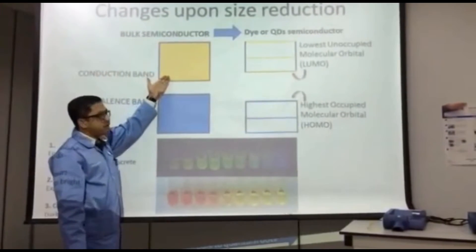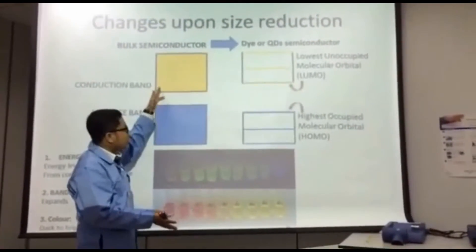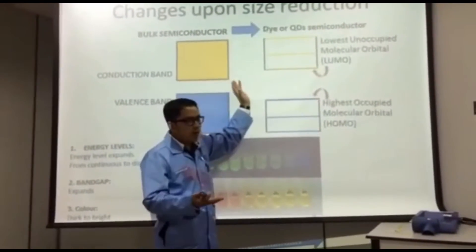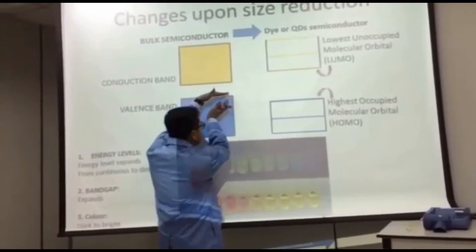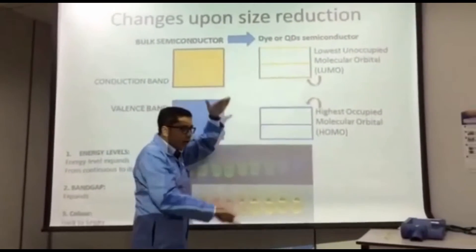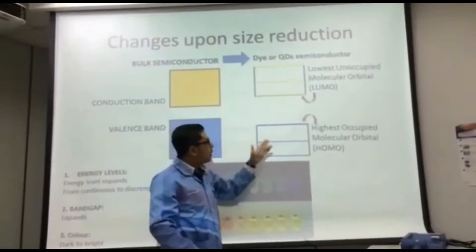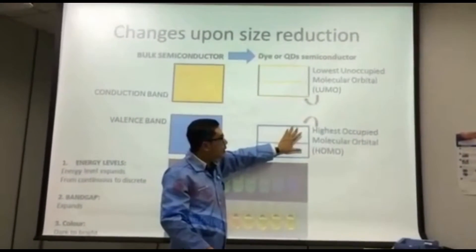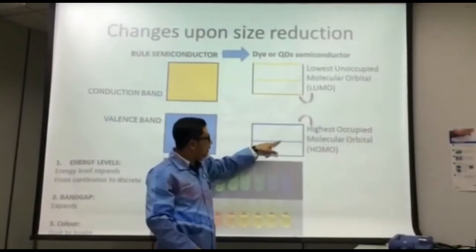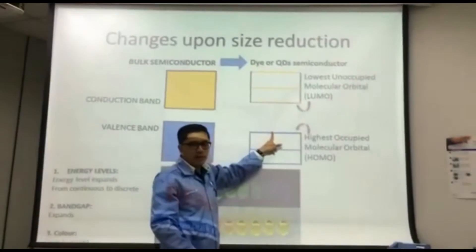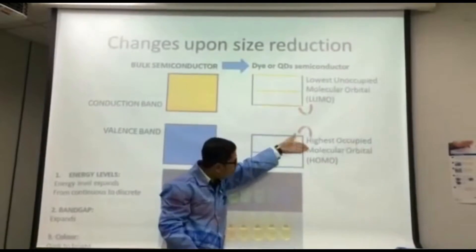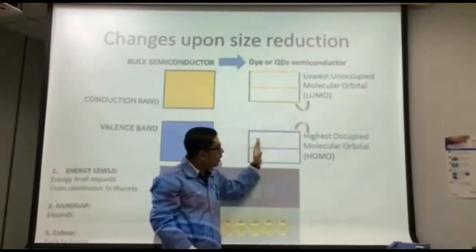The same applies to the conduction band — the energy levels are really close to each other. Now when we reduce the size to the nanometer range, the energy levels expand and become more widely separated. We no longer call them bands. Instead, we call them Highest Occupied Molecular Orbitals, or HOMO, on the valence band side.